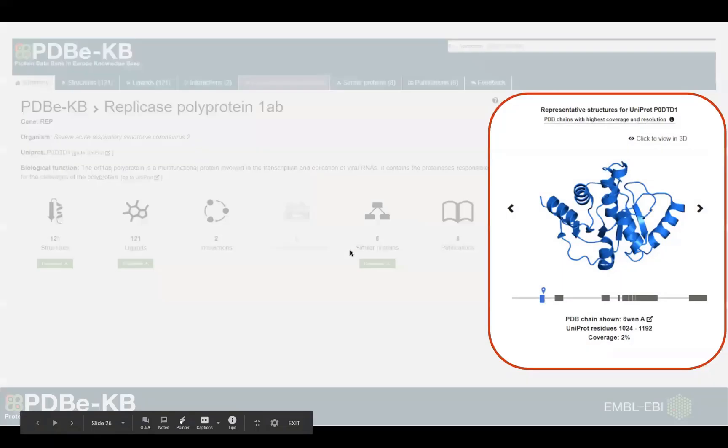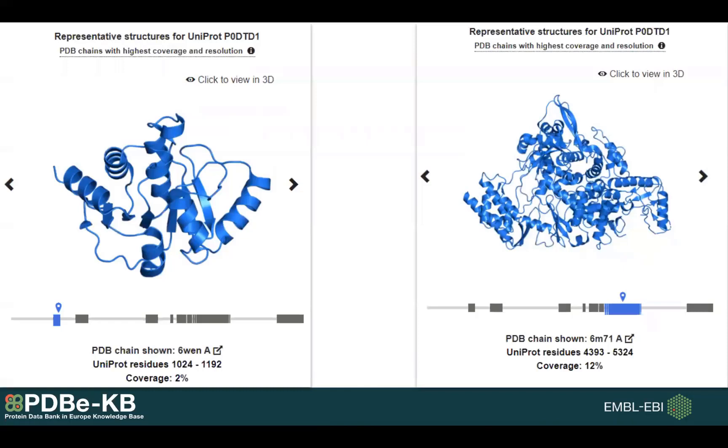One thing I would like to highlight here is this panel on the right. What you can see here is that the polyprotein is quite long and different segments of it are covered by different PDBs. For example, this blue box means that for that particular segment of the protein we have a PDB entry which happens to be 6WEN.